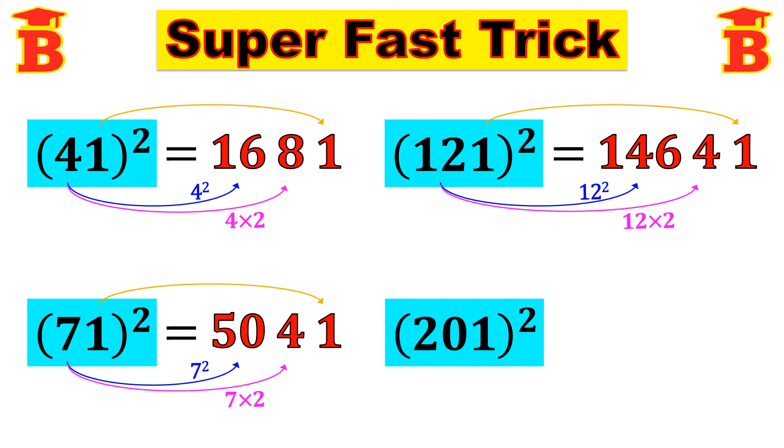Similarly, we can find 201 whole square. This number 201 also ending with 1. So we can apply the same technique. Since it is ending with 1, always the last digit is 1. Next, take the number 20 and multiply by 2. 20 into 2, 40. We write 0 and take carry 4.